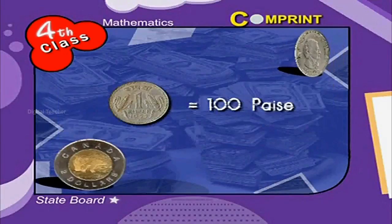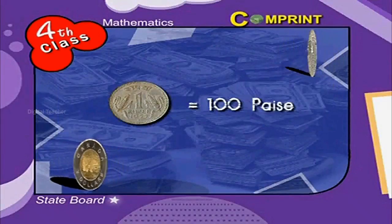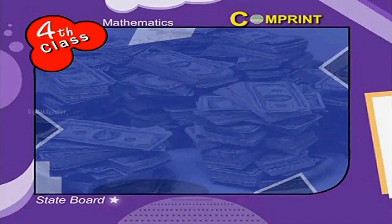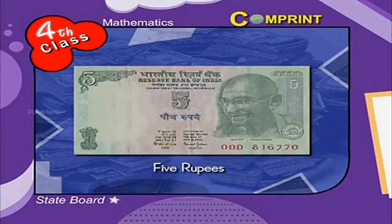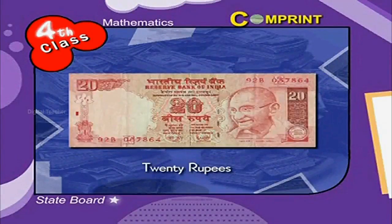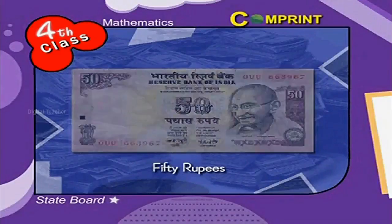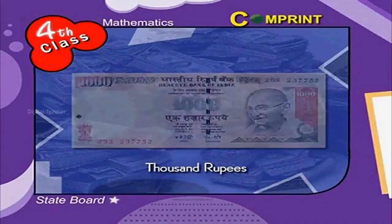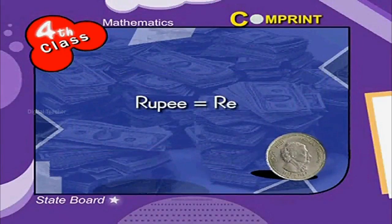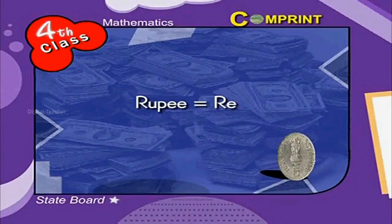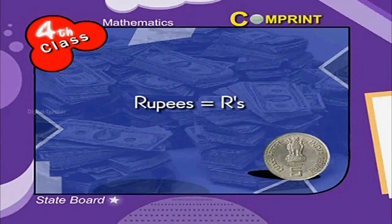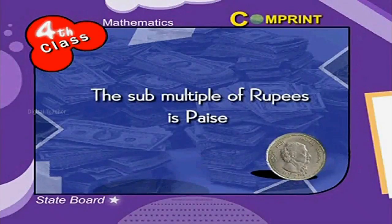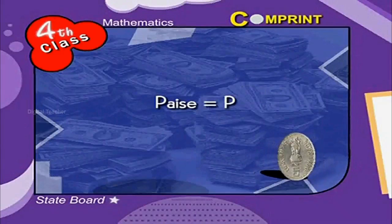1 rupee is equal to 100 paisae. Paper money is called currency. Examples of currencies include 5 rupees, 10 rupees, 20 rupees, 50 rupees, 100 rupees, 500 rupees, and 1000 rupees. The short form of rupee is Re and the short form of rupees is Rs. The sub-multiple of rupees is paisae, and the short form of paisae is P.